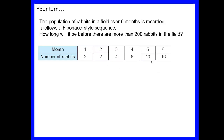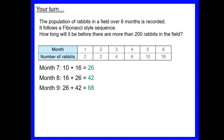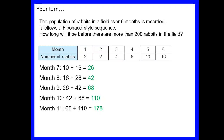Continuing the sequence: month 7 is 10 + 16 = 26, month 8 is 16 + 26 = 42, month 9 is 26 + 42 = 68, month 10 is 42 + 68 = 110, month 11 is 68 + 110 = 178, month 12 is 110 + 178 = 288. Since 288 > 200, after 12 months there are more than 200 rabbits.